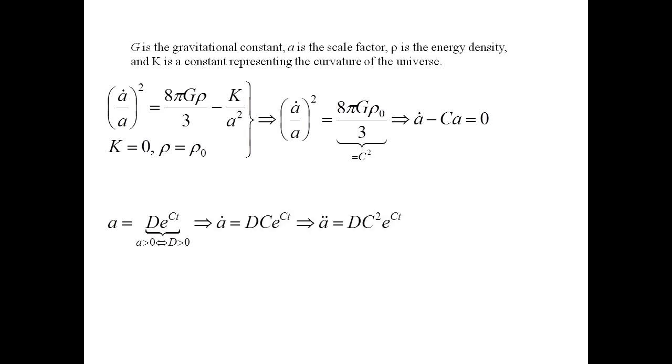Take the time derivative to get the expansion rate, and again to get the acceleration, which comes to DC squared E to the CT. Get rid of the C notation, since that was just shorthand. And, oh, look at this! A double dot is positive.